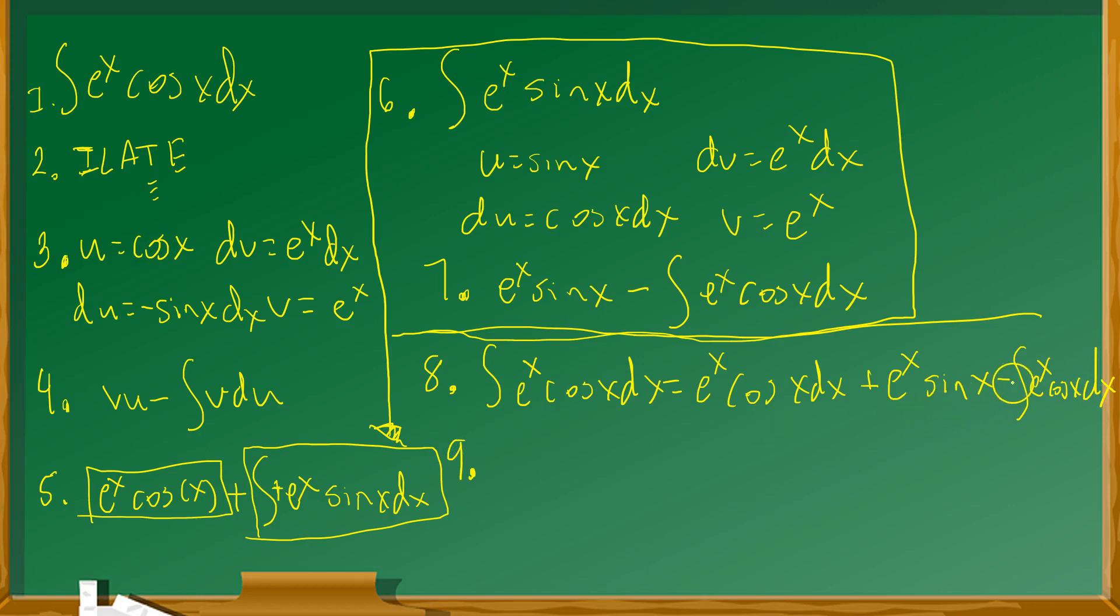But this is helping because now you can add e to the x cosine x dx from the right side to the left side. It's going to give you two e to the x cosine x dx equals e to the x cosine x plus e to the x sine x. So I took this term and I moved it to the left side of the equal symbol with addition. Which means lastly at the last step, you just divide both sides by two.